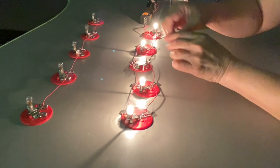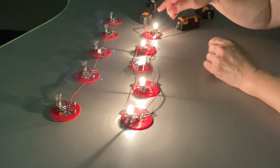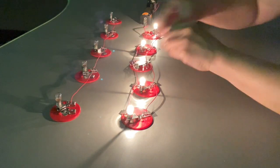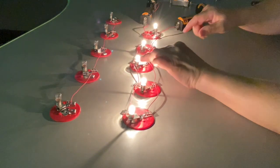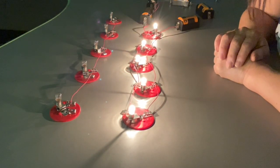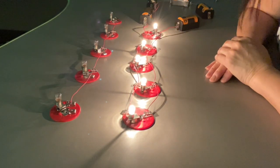Whereas in a series circuit, since the electricity only flows one direction and one path, if the path is interrupted by a missing bulb or a burnt out bulb, which opens the circuit, the whole string of lights doesn't work.